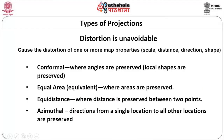We have conformal projections where angles are preserved — local shapes are preserved but other things are affected. Equal area or equivalent projections where areas are preserved but others are affected. Equidistant projections where distance between two points is preserved but others are distorted. And azimuthal projections where directions from a single point to all other locations are preserved. These four — conformal, equal area, equidistant, and azimuthal — are the main types.